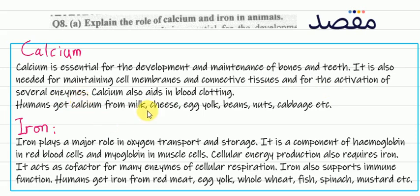Calcium also aids in blood clotting. Plasma proteins involved in blood clotting — such as thrombin and fibrinogen — require calcium. So calcium plays a very important role in this process.